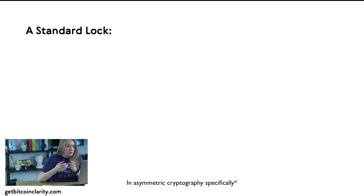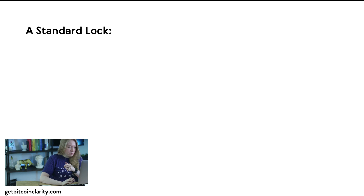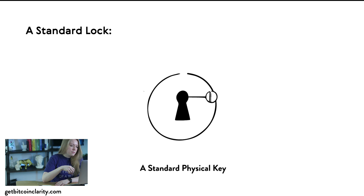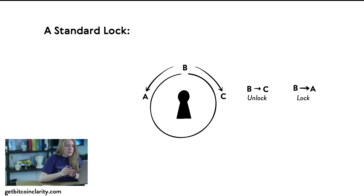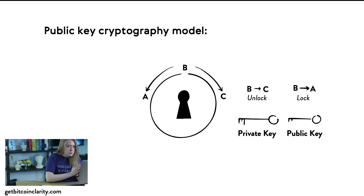We have the public key and the private key. We understand what a basic physical key is — this animation shows a standard physical key where you turn it one way to lock the door or another way to unlock it. The difference with Bitcoin is that we split these two functions into two separate keys: a private key that unlocks and a public key that locks.